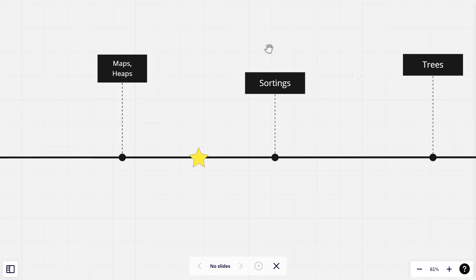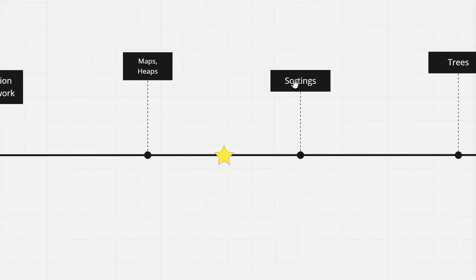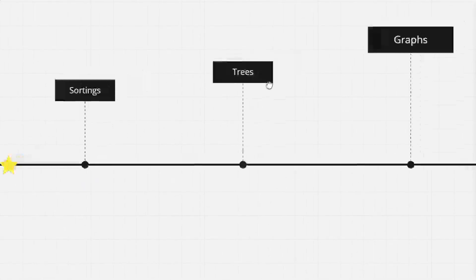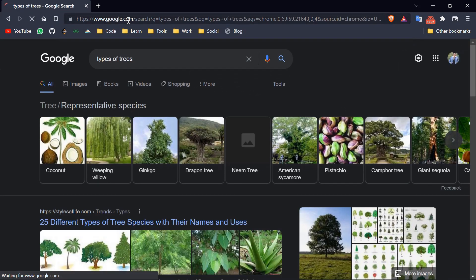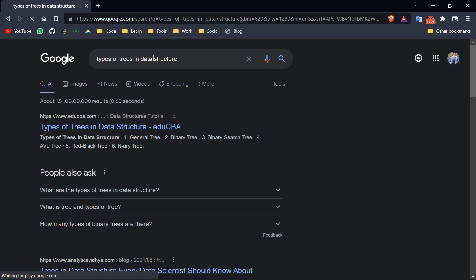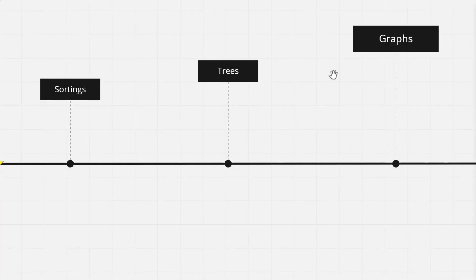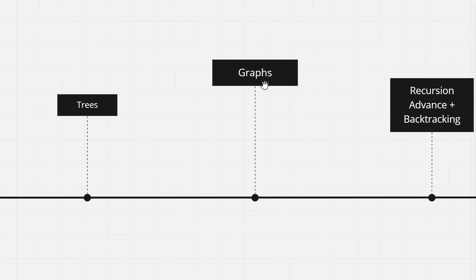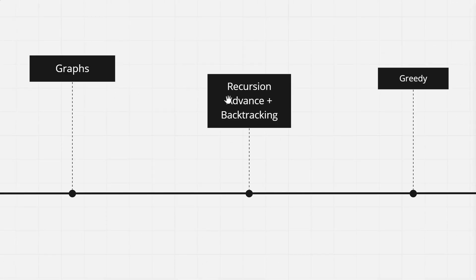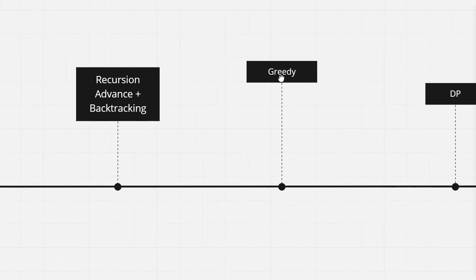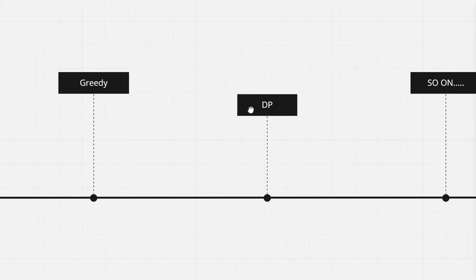After maps and heaps, we will learn about sorting — deep diving into sorting concepts and solving some advanced problems. Then we will move ahead to trees, which is going to take time. There are many topics: binary tree, binary search tree, AVL tree, red-black tree, and tries. After that we move to graphs, where we will learn all the famous algorithms in detail. Then we will do advanced recursion and backtracking, solving many famous problems.